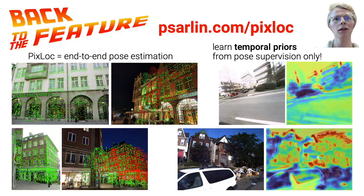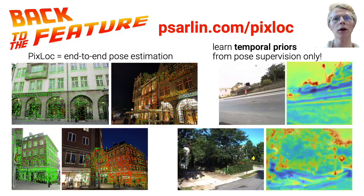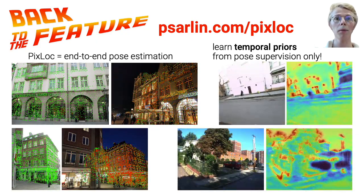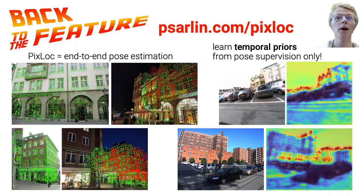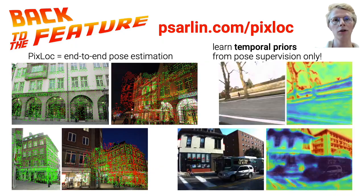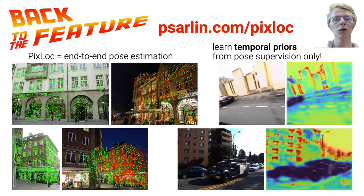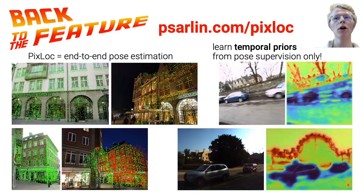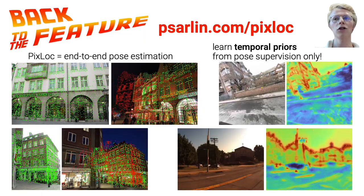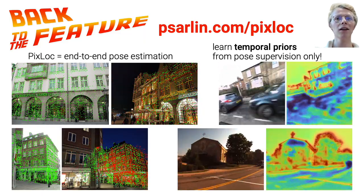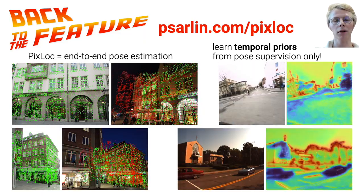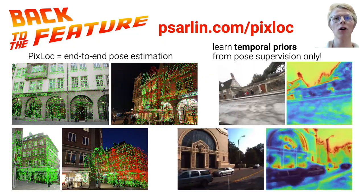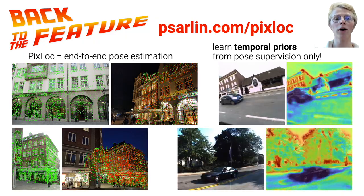We presented PixLoc, a system that learns to estimate a camera pose from an image, end-to-end. It is robust, accurate, and generalizes well across different scenes and environments. By training end-to-end, PixLoc can learn robust, powerful temporal priors from pose supervision only, such as distinguishing dynamic and static objects like cars and buildings. You can find the paper, the code, and cool interactive visualizations on our website. Thanks for watching!